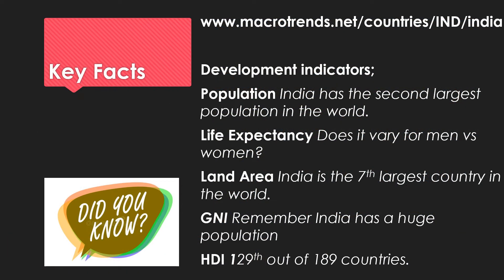Moving on to key facts and our development indicators. At the top is the website I use to find a lot of this information — if you struggled to find UK information last week, it's a good one to try. For context: India has the second largest population in the world, in the billions. For life expectancy, as good geographers you should start comparing and contrasting — does it vary for men versus women, and how does it compare to the UK? India is also the seventh largest country in the world by area.